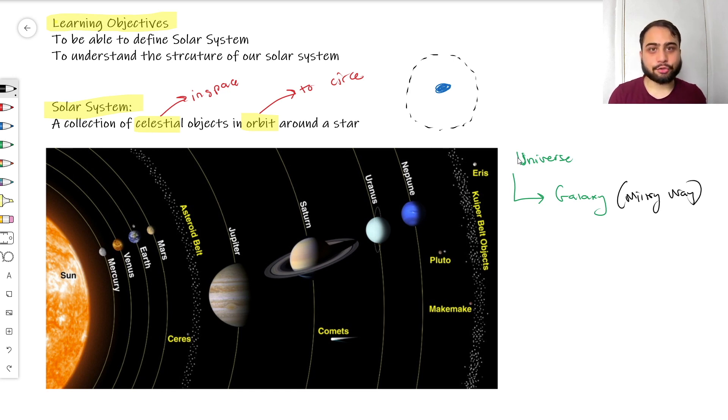This is a sort of collection of solar systems. And then from a galaxy we get solar systems, which is what we're going to look at today. And from solar systems you get planets and stars, comets, asteroids, etc.